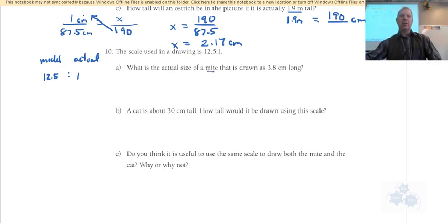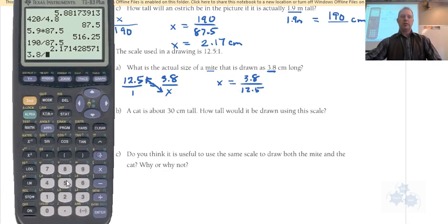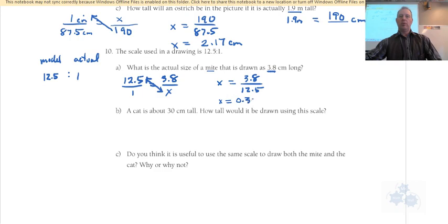Okay, so what's the actual size of a mite? So we're talking about a mite, small little mite, that is drawn as 3.8 centimeters long. Okay, well, this is pretty easy. We can set this up as a proportion, 12.5 is to 1, as, now the mite is, this is the model representation. So that's going to go on top. And we don't know the actual size, that's x. So it's pretty easy. x and 12.5, they switch. And we're left with x equals 3.8 divided by 12.5. So x equals 0.304, what? That would be centimeters, right? Because we're talking with everything is centimeters in here.